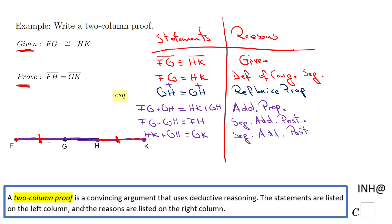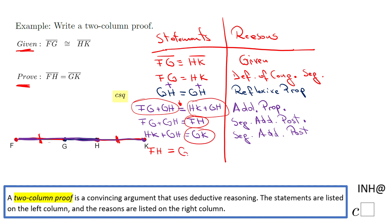And now I'm going to do one more thing: substitution. I'm going to replace FG plus GH with FH, and HK plus GH with GK. So FH equals GK. That is what we call the substitution property of equality.